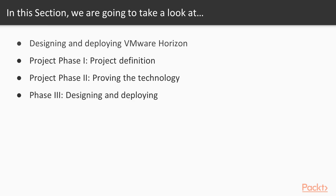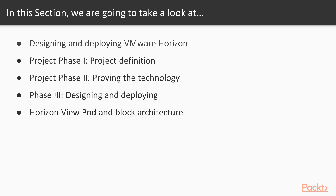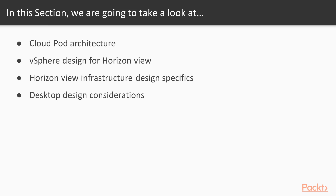A big part of this initial work is to build a picture and understand your current user environment and what specifically you should be looking out for. Once armed with the data from the current environment and the project outline, you can move into the design phase and look at how to build the solution, working with the VMware Horizon View architecture as our design blueprint. We'll also look at how to add DR and scalability into the solution with the CloudPod architecture, before finishing off by looking at some of the design elements for building vSphere to host your virtual desktops and the design of the virtual desktops themselves.